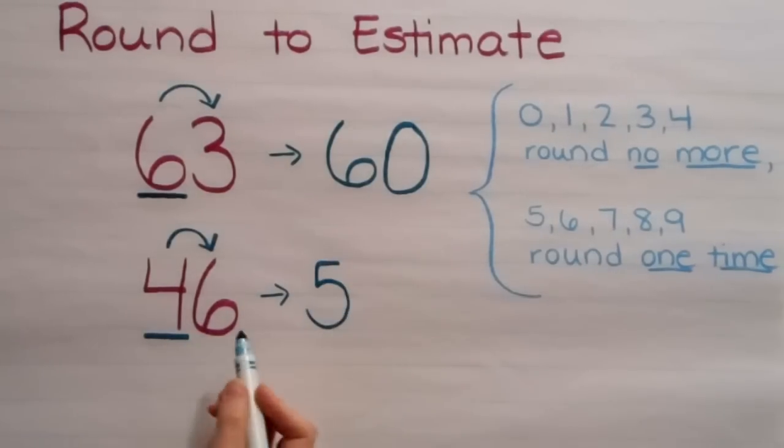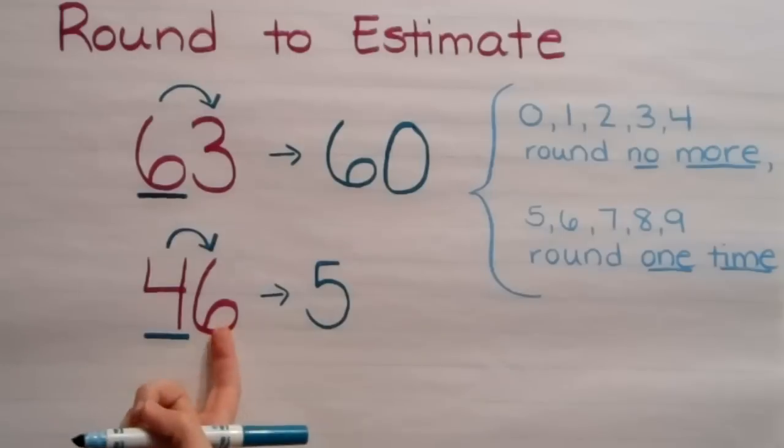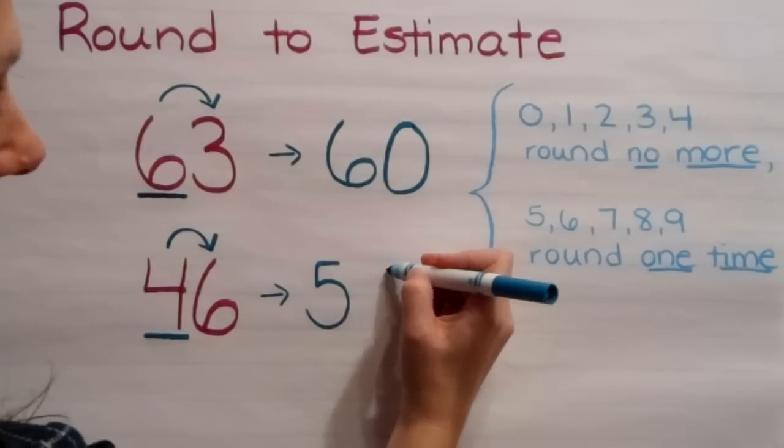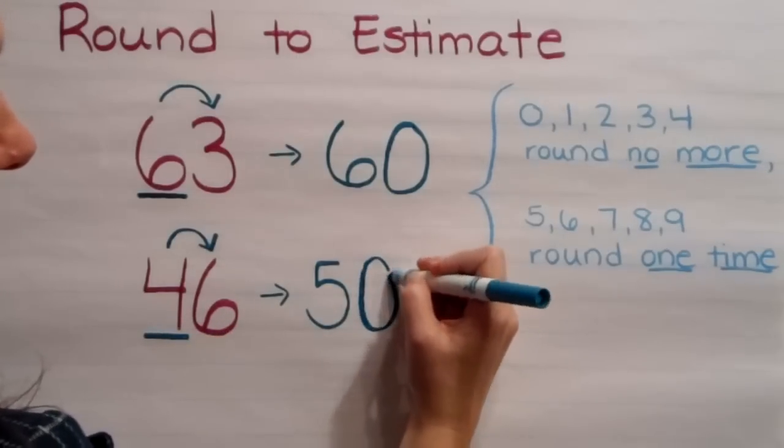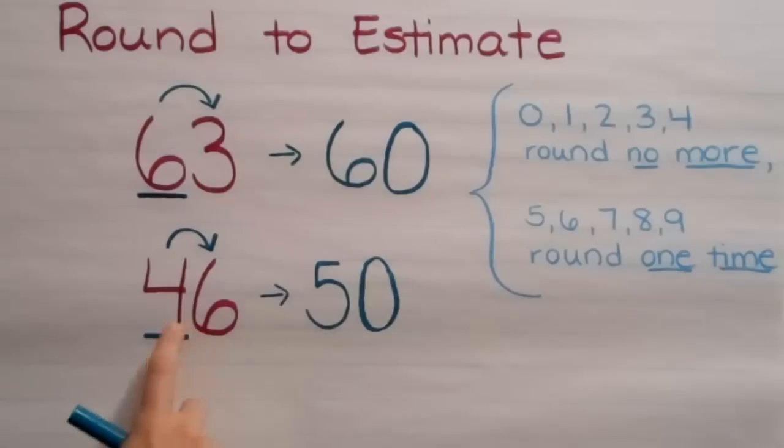Now, everything behind it will turn into a zero. There's only one place, which is my ones place, behind it, and so that number will turn into a zero. So 46 rounds to 50, and 63 rounds to 60.